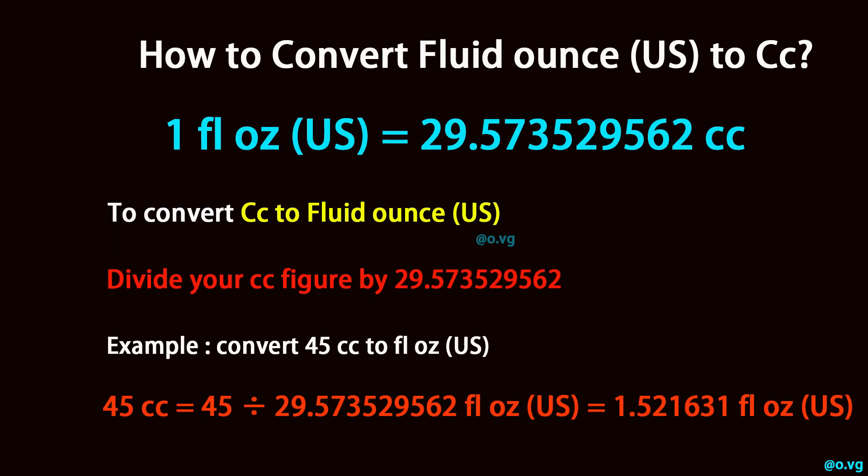To convert CC to Fluid Ounce U.S., divide your CC figure by 29.573529562. Example: Convert 45 cubic centimeters to Fluid Ounce U.S. 45 cubic centimeters equals 45 divided by 29.573529562, which equals 1.521631 Fluid Ounce U.S.